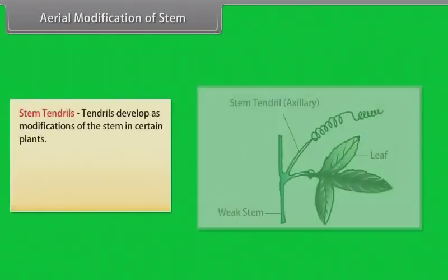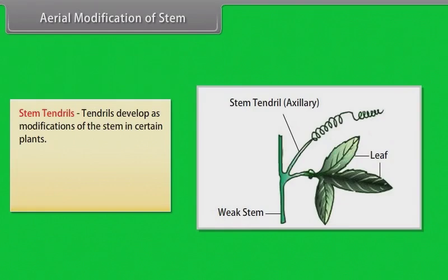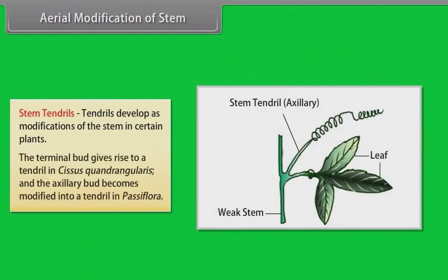Tendrils develop as modifications of the stem in certain plants. The terminal bud gives rise to a tendril in Cissus quadrangularis, and the axillary bud becomes modified into a tendril in Passiflora.